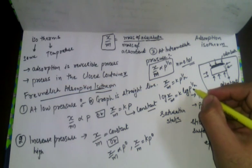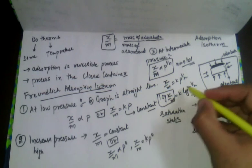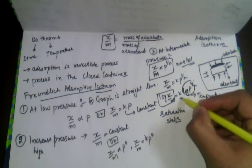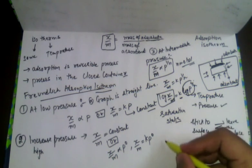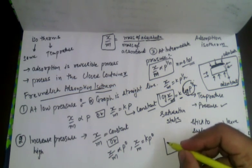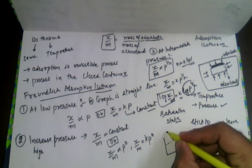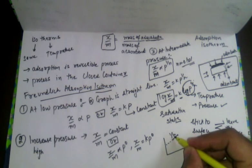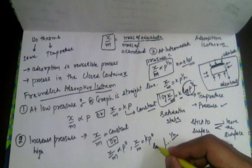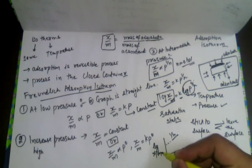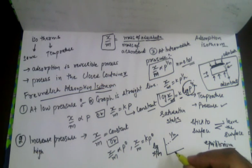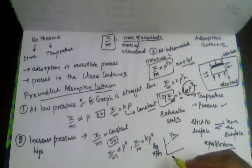If we take the log of the Freundlich equation and plot a graph between log(x/m) and log P, we get: log(x/m) = log k + (1/n) log P. This gives a straight line, where the slope is equal to 1/n and the intercept is log k. This is all about adsorption isotherms.